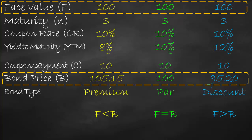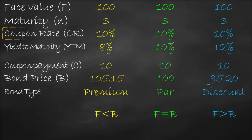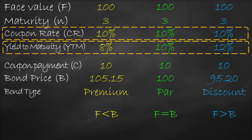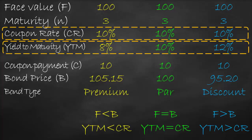We can also establish a relationship between coupon rate and yield to maturity. The coupon rate is the interest rate we receive; yield to maturity is the discount rate — the opportunity cost we sacrifice. For a premium bond: coupon rate > yield to maturity, and bond price > face value. For a par bond: coupon rate = yield to maturity (both 10%), and bond price = face value. For a discount bond: coupon rate < yield to maturity (10% vs 12%), and bond price < face value.